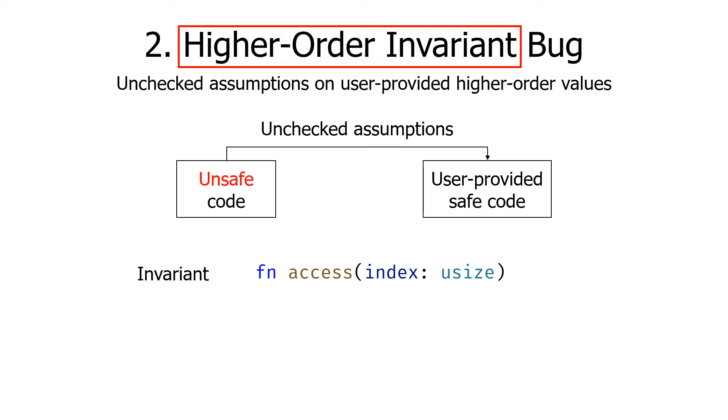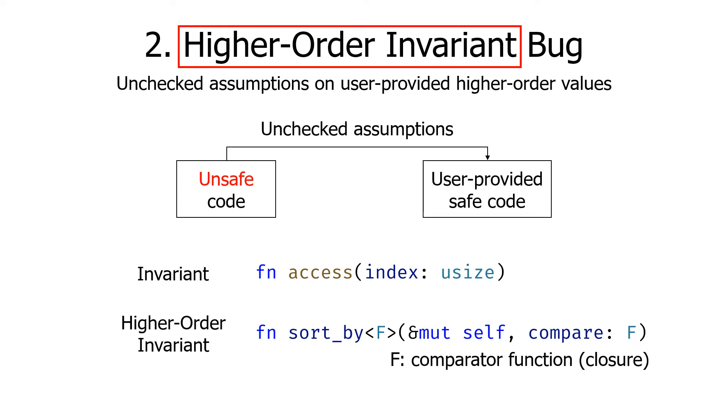As a high-level language, Rust allows programmers to pass not only values but also custom logic in forms of a type parameter or a closure. For instance, Rust arrays have a sort_by function, which takes a comparator function from the user and sorts the array based on it. Just like the access function needs to check invariants on the index parameter, sort_by function also needs to check invariants of the compare function, so that no safe comparator function causes a memory safety bug. Unfortunately, guaranteeing the higher-order invariant is much more difficult than checking a simple invariant on values.